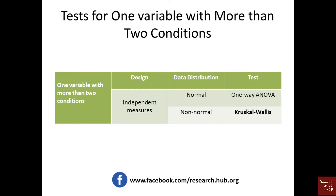First we need to understand the context. We assume we have only one variable which has more than two conditions. The design of the study is independent measures — if it were repeated measures, we would use a different test.